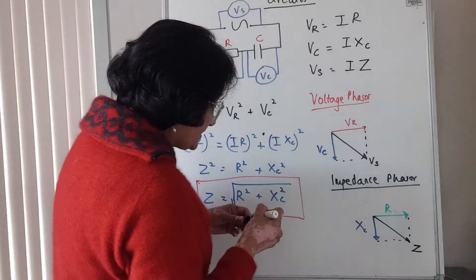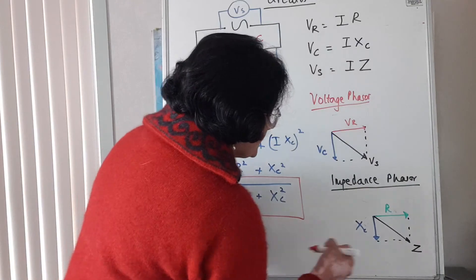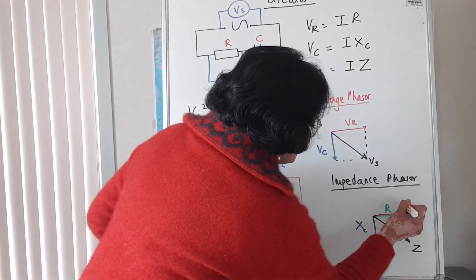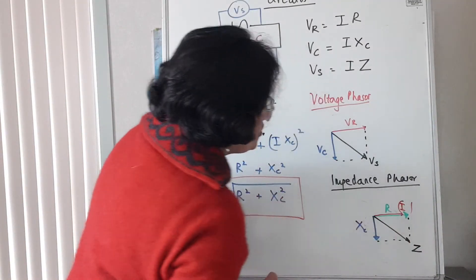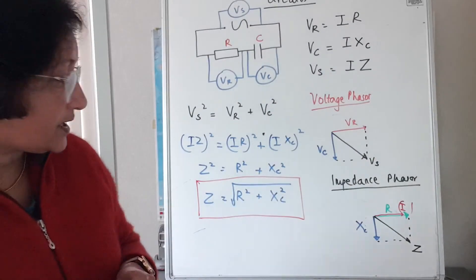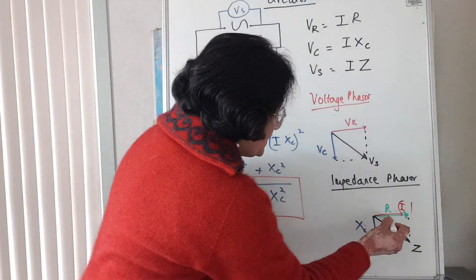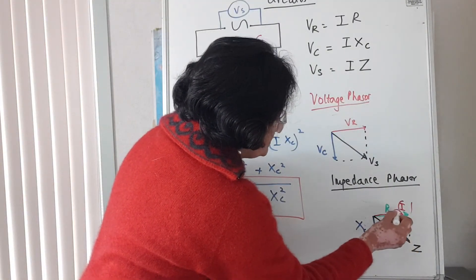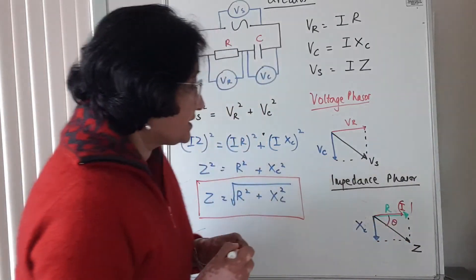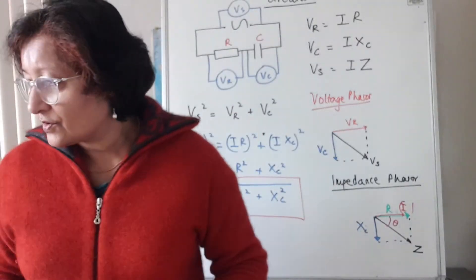The thing you need to remember is that the circuit current is always in phase with the resistor, and the impedance lags the resistance by theta degrees.